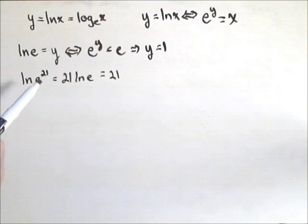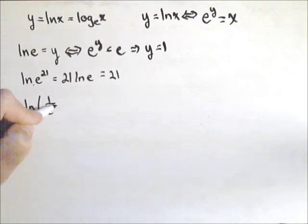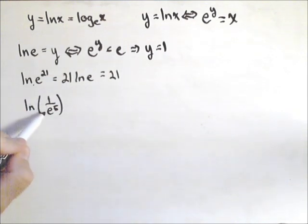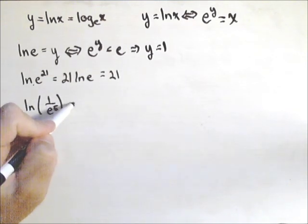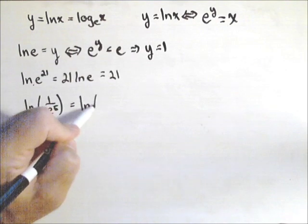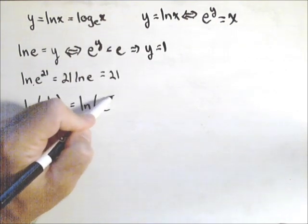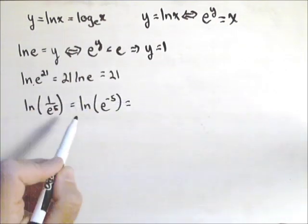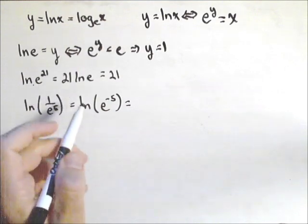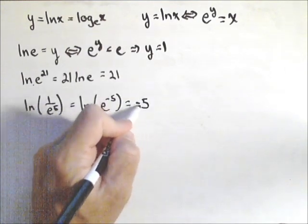So these are the kind of properties we're going to want to deal with. What if we had ln of 1 over e to the 5th? We could rewrite this as a base e. We could rewrite this as ln of e to the negative 5th, which we know by our property above is equal to negative 5.